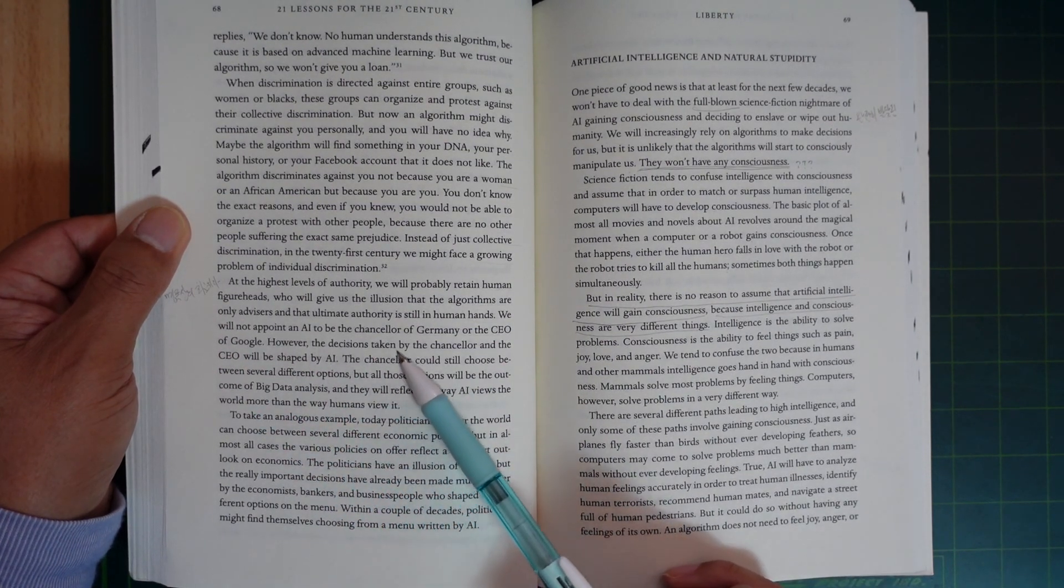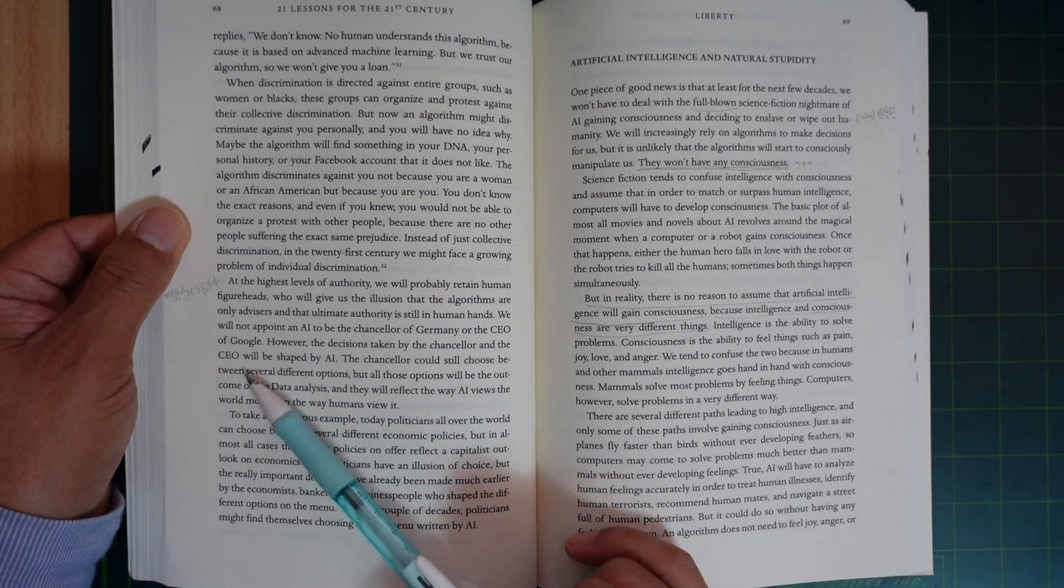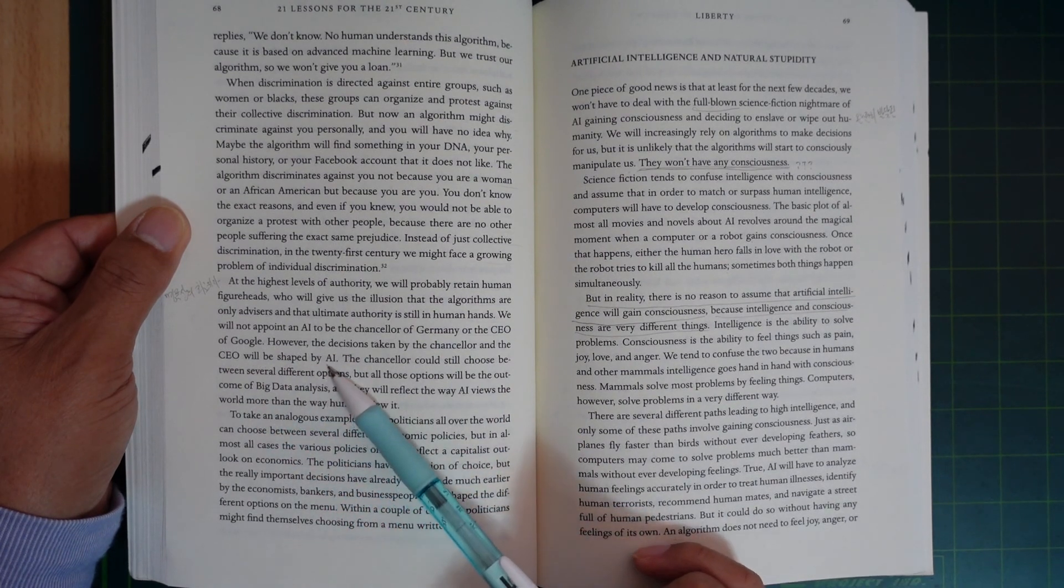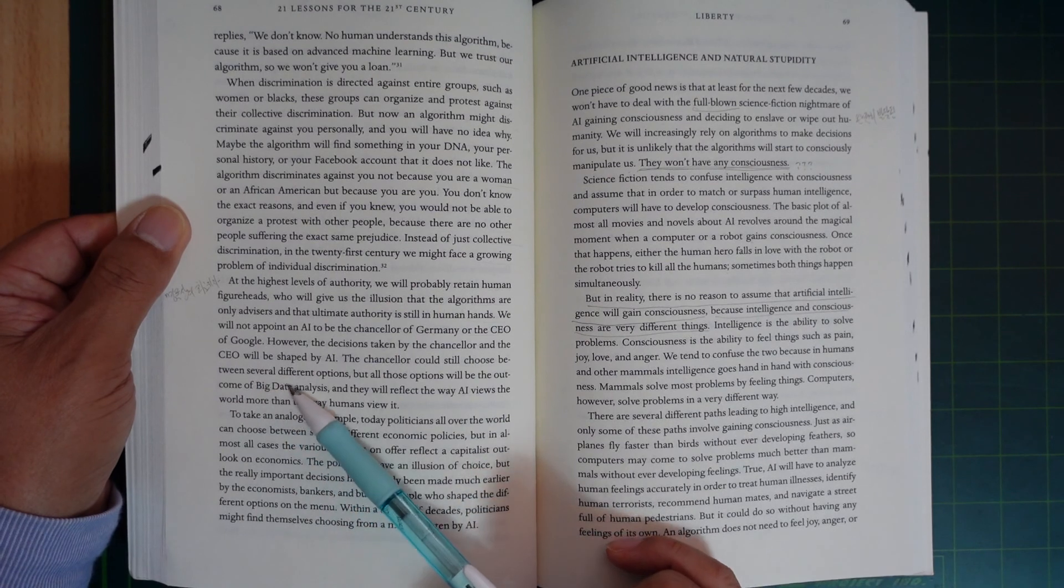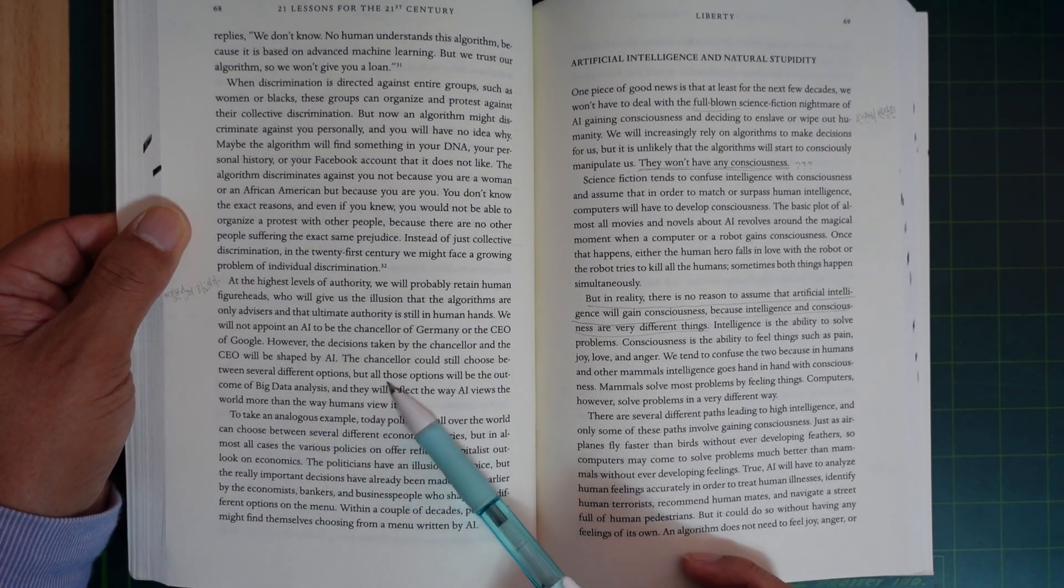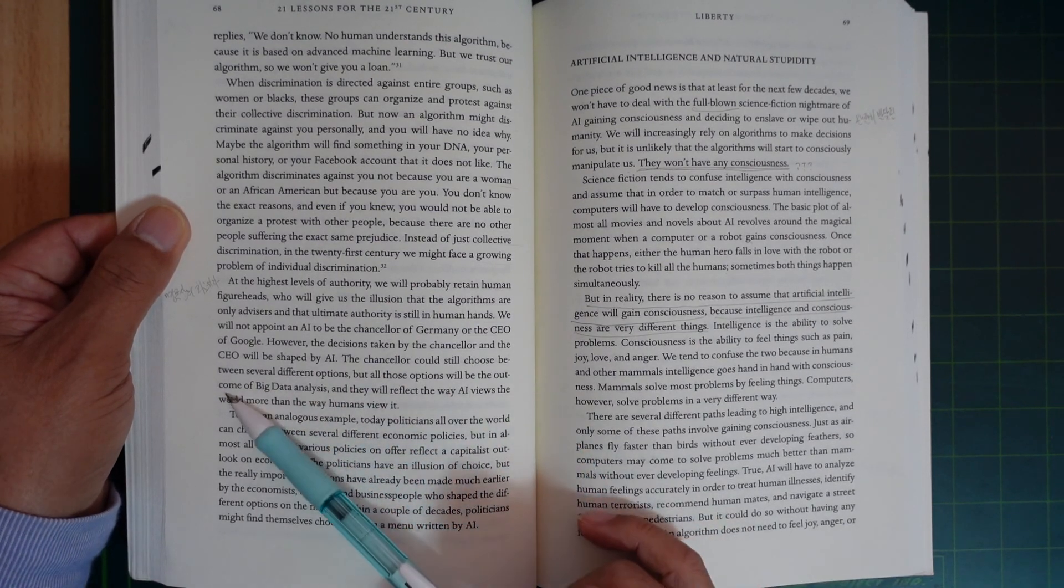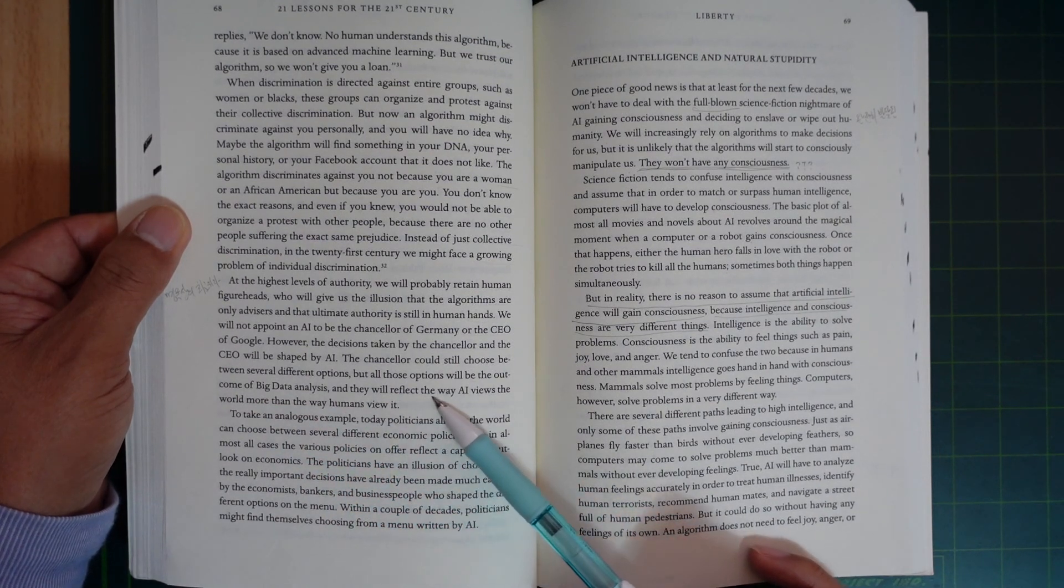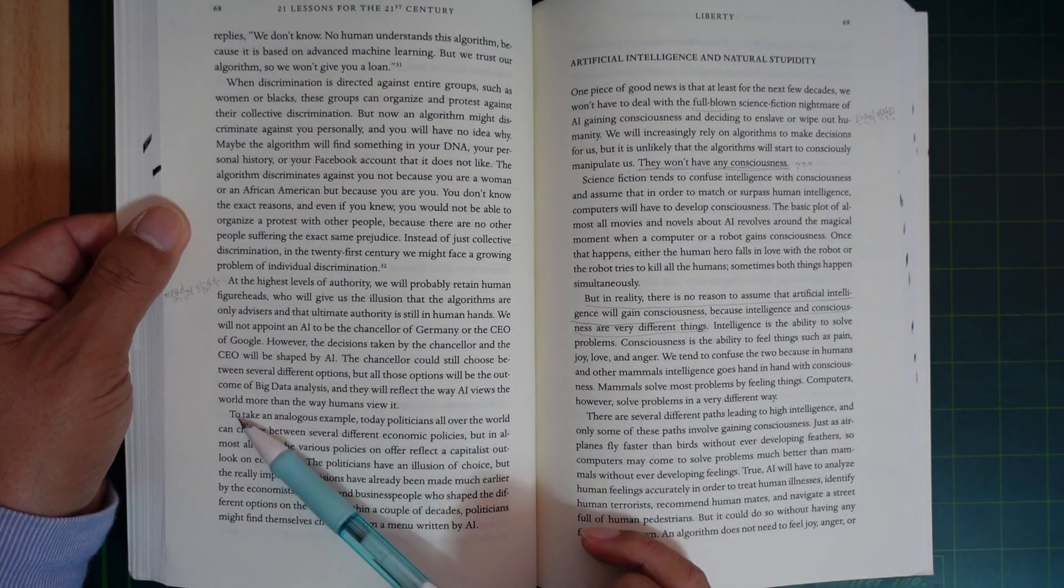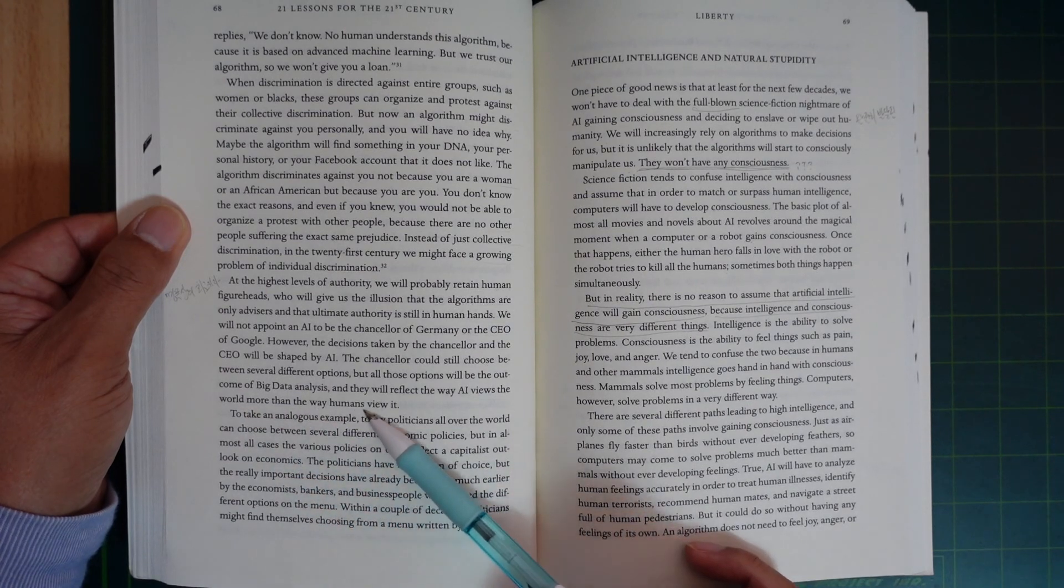However, the decisions taken by the Chancellor and the CEO will be shaped by AI. The Chancellor could still choose between several different options, but all those options will be the outcome of big data analysis, and they will reflect the way AI views the world more than the way humans view it.